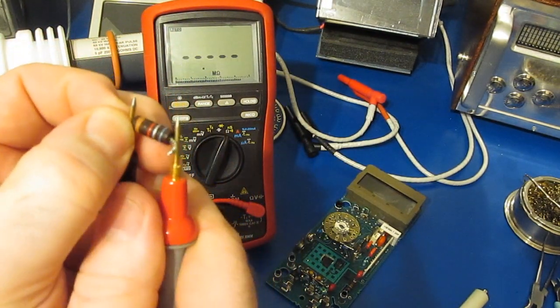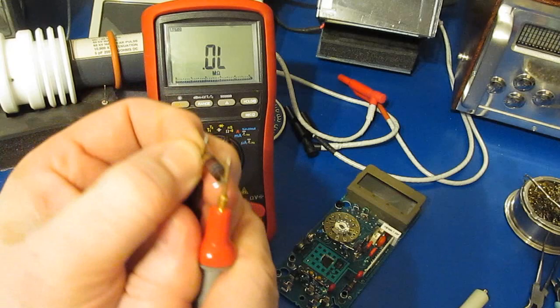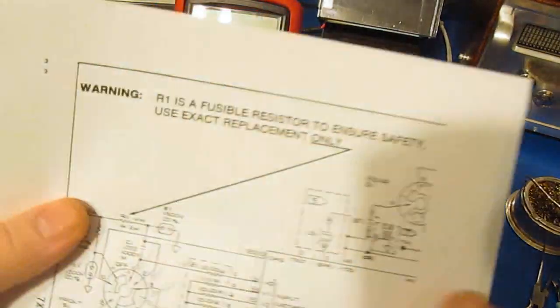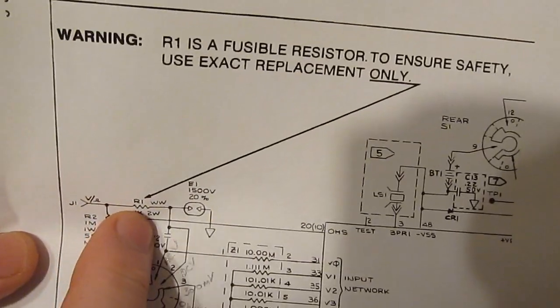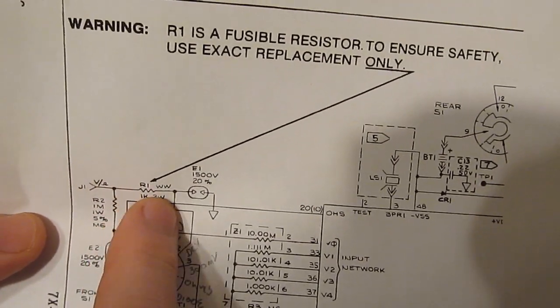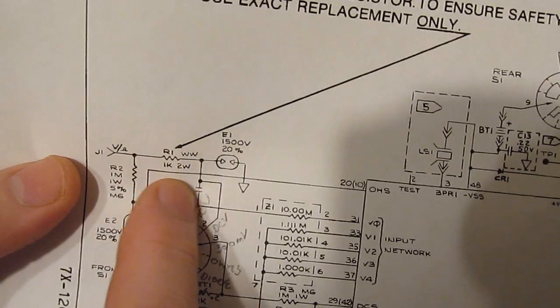What it failed is this resistor. So this is the resistor from the meter. If we look at the resistance with the Brymen you can see it's an open, so this will have to be replaced. We look at the schematic for this particular meter, this is the resistor that we're talking about, R1.